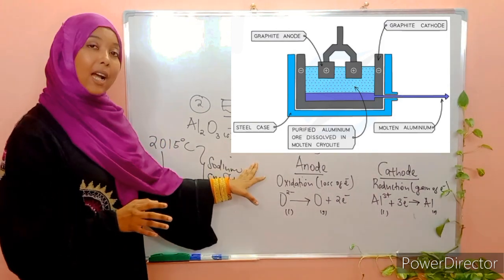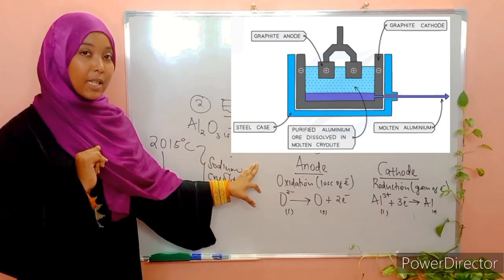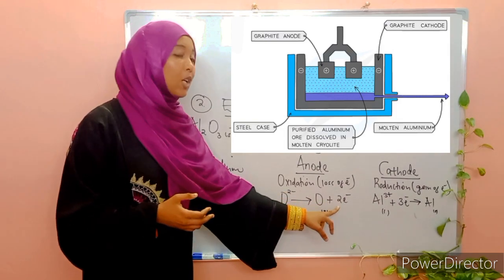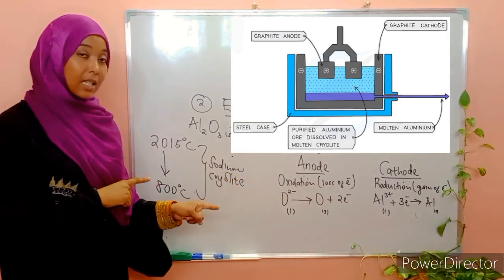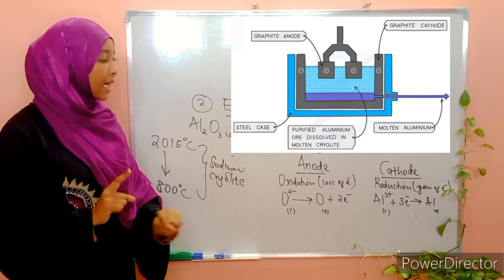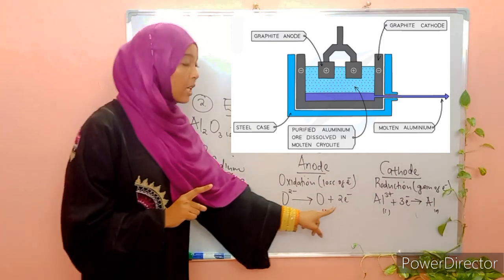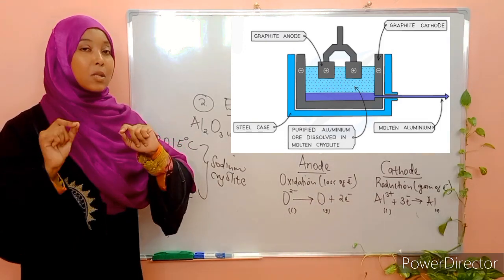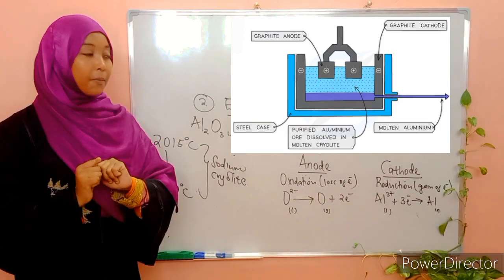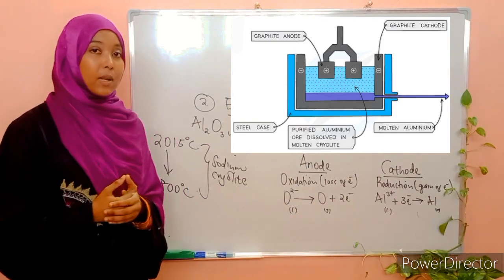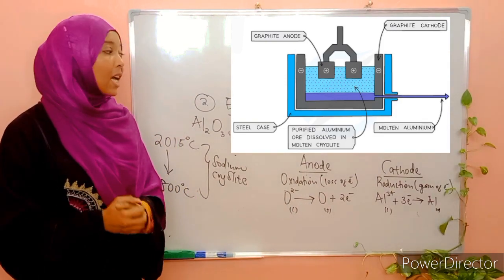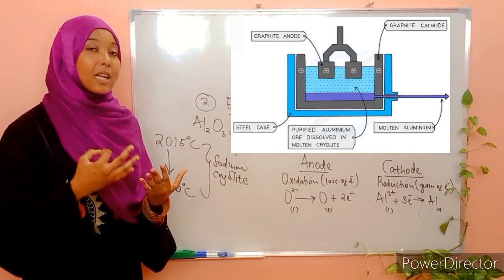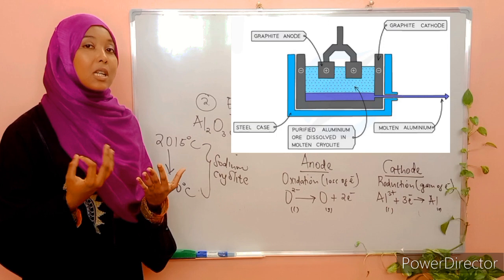At the anode, oxidation takes place — this is the loss of electrons. In this case, oxygen ions migrate towards the anode and lose two electrons each. The number of electrons lost or gained by a species depends on its valency. At the cathode, reduction takes place — this is the gaining of electrons. Aluminium ions are present at the cathode, so they gain three electrons each and are deposited in the form of aluminium metal.